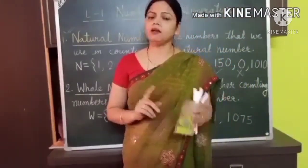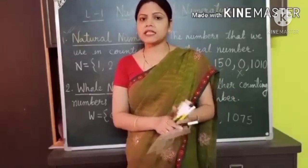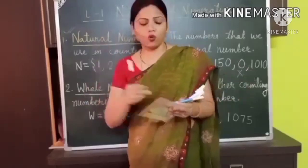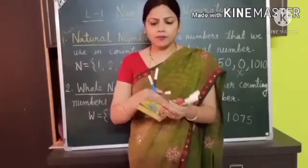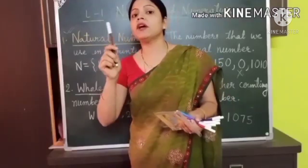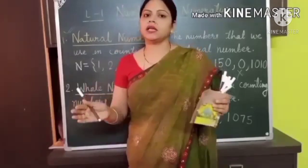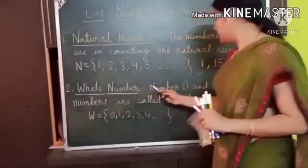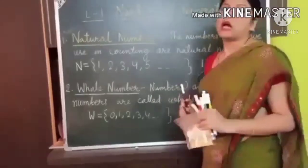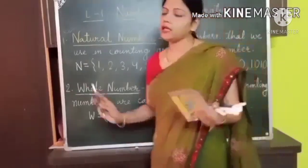Any counting number is a natural number. Now, what is a whole number? When I was counting these sketch pens, I started my counting with 1, not with 0. Because this is not nothing — this is 1. When we put 0 before the natural numbers, it becomes the whole number. Number 0 and other counting numbers are called whole numbers, represented by W = 0, 1, 2, 3, 4, and so on.